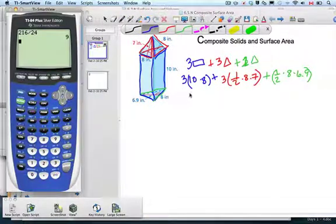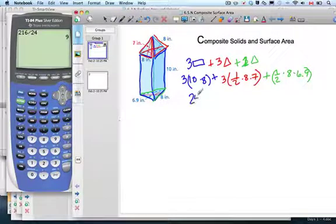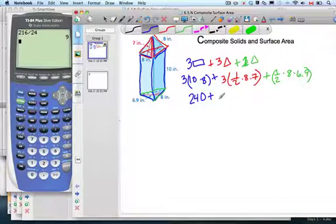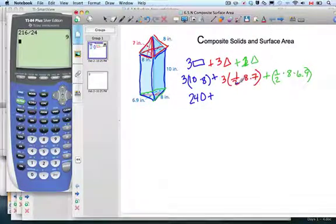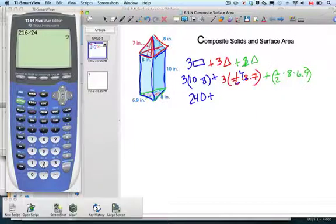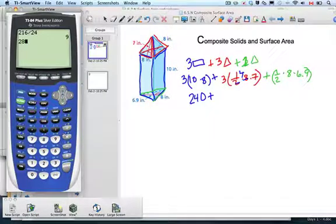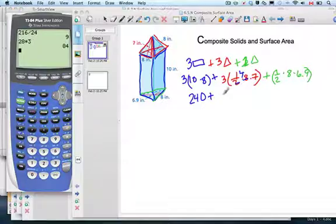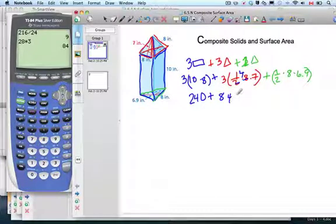So three times 8 times 10, that's 240. Plus, maybe we should calculate that one out. Well, we can cancel the 4. 28 times 3 is 84.